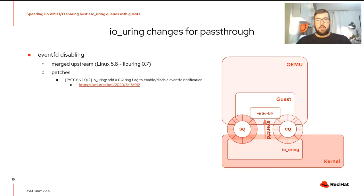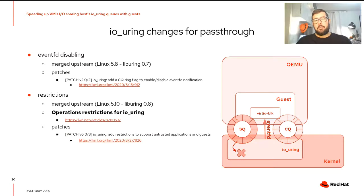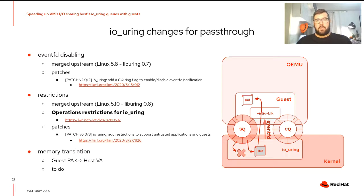In order to share submission and completion queues with the guest, we needed some changes in IOUring. The first was a way to enable and disable eventfd notification at runtime, used to disable interrupts in the guest when polling the completion queue. The second and most important change was a way to restrict the operations allowed in an IOUring context, to safely share the rings with untrusted processes or guests — there's a good article on LWN.net about this feature. The last change concerned memory translation: IOUring expects host virtual addresses, but the driver in the guest uses guest physical addresses, so we need a mechanism to register the memory mapping allowing IOUring to translate these addresses. Unfortunately, this feature is not yet available.